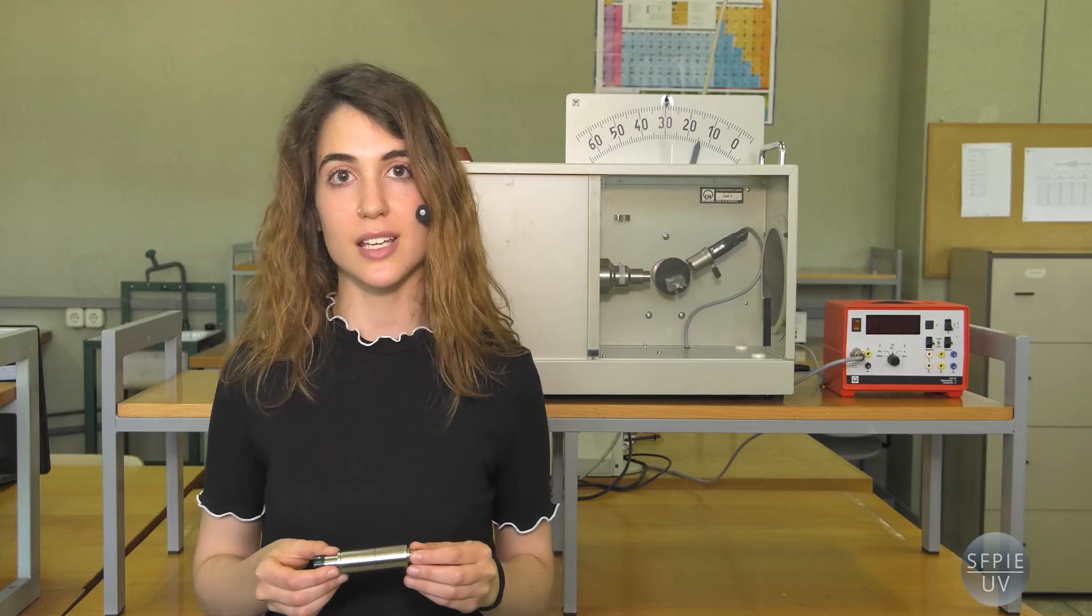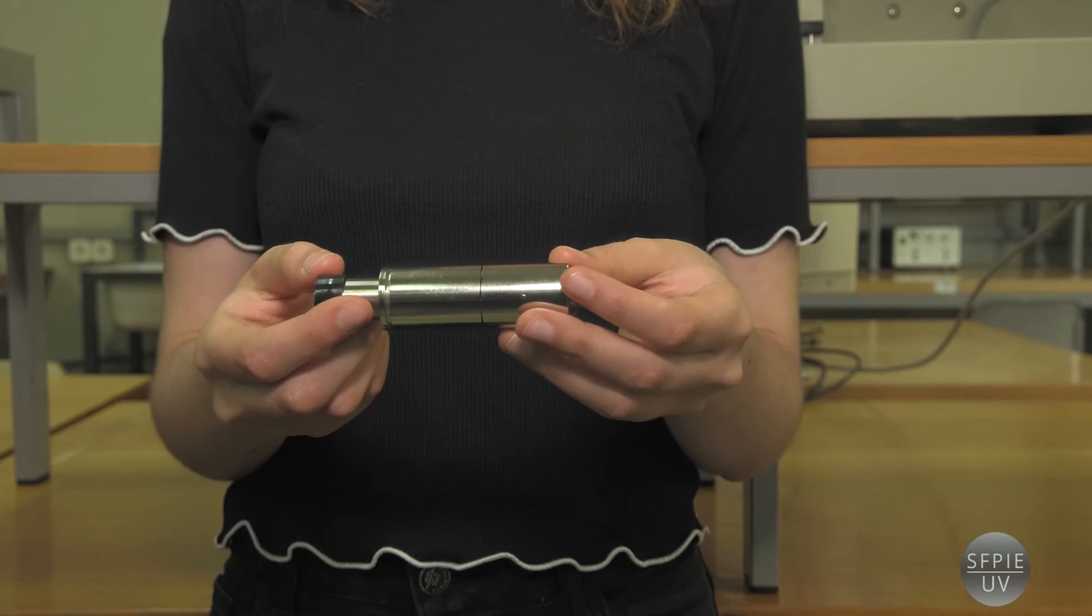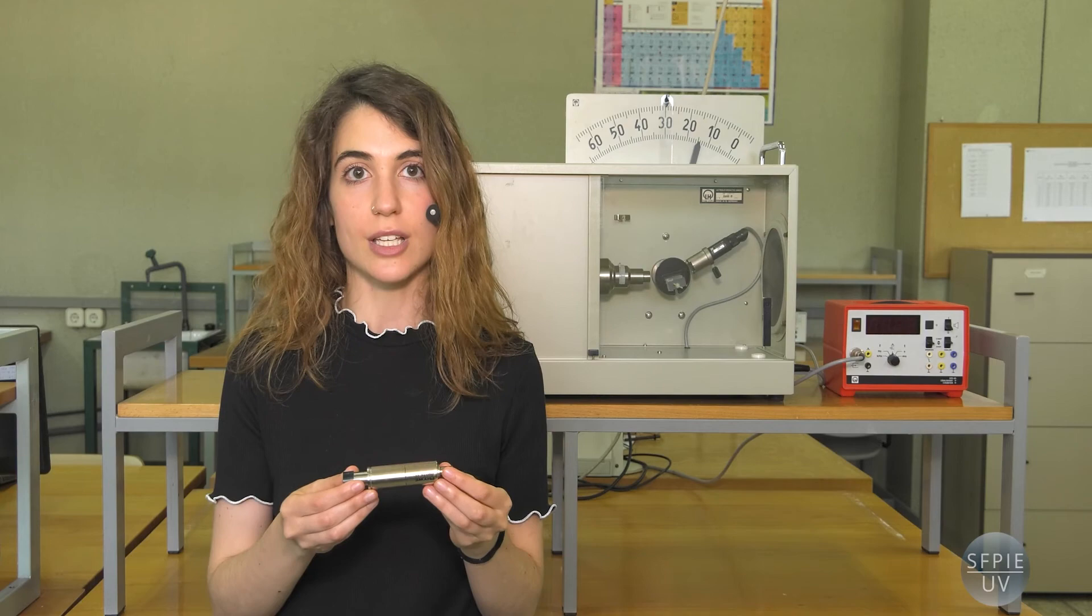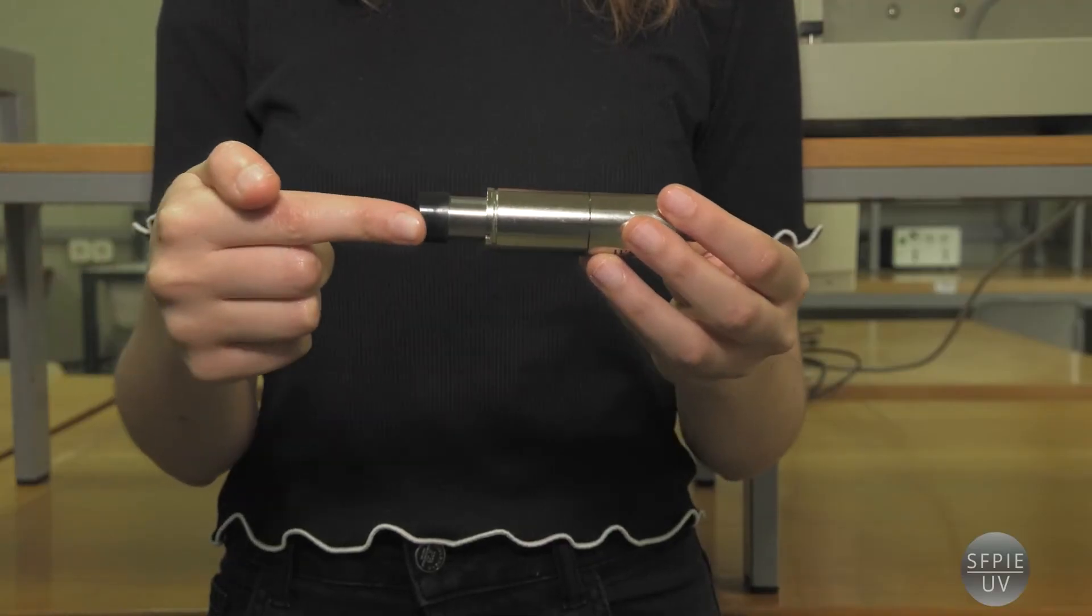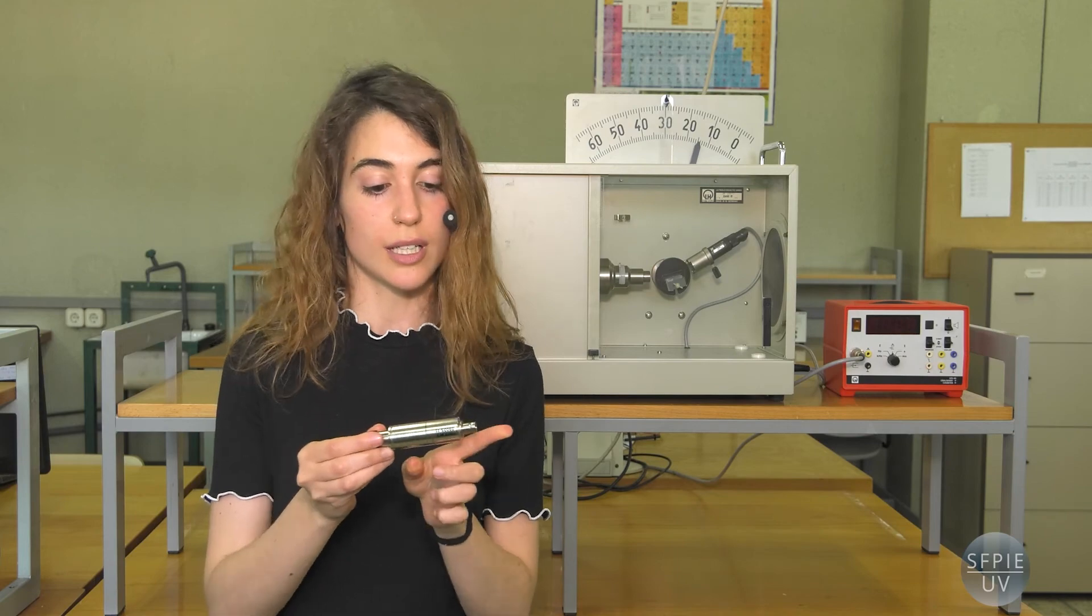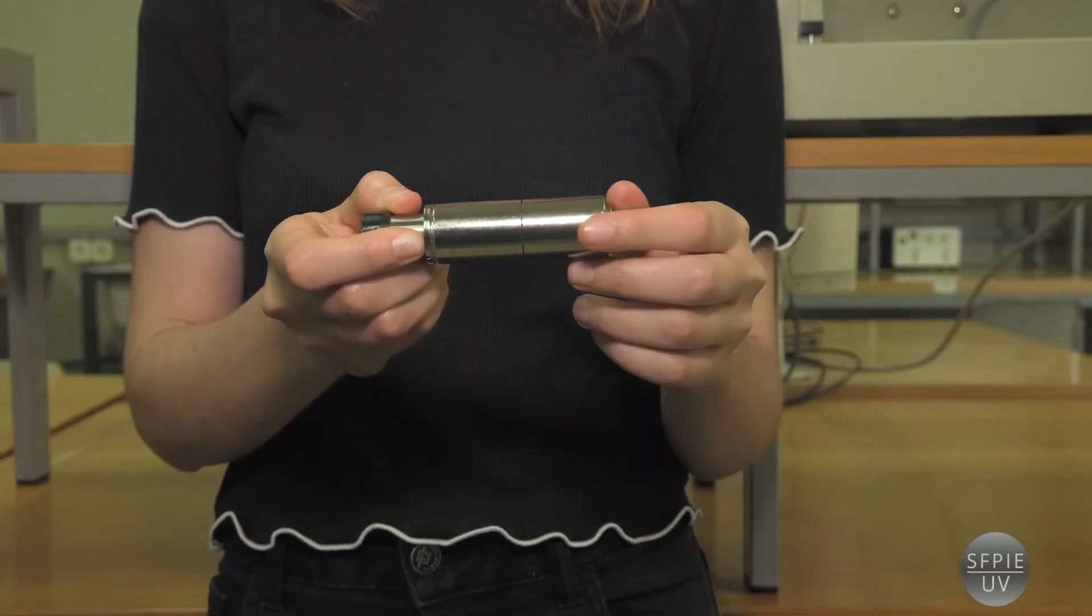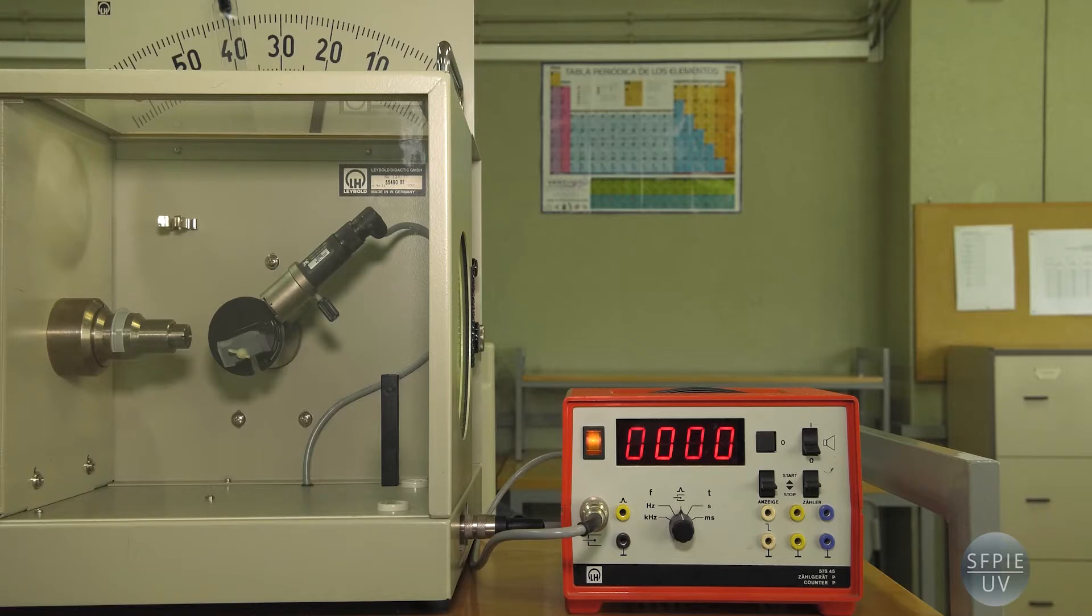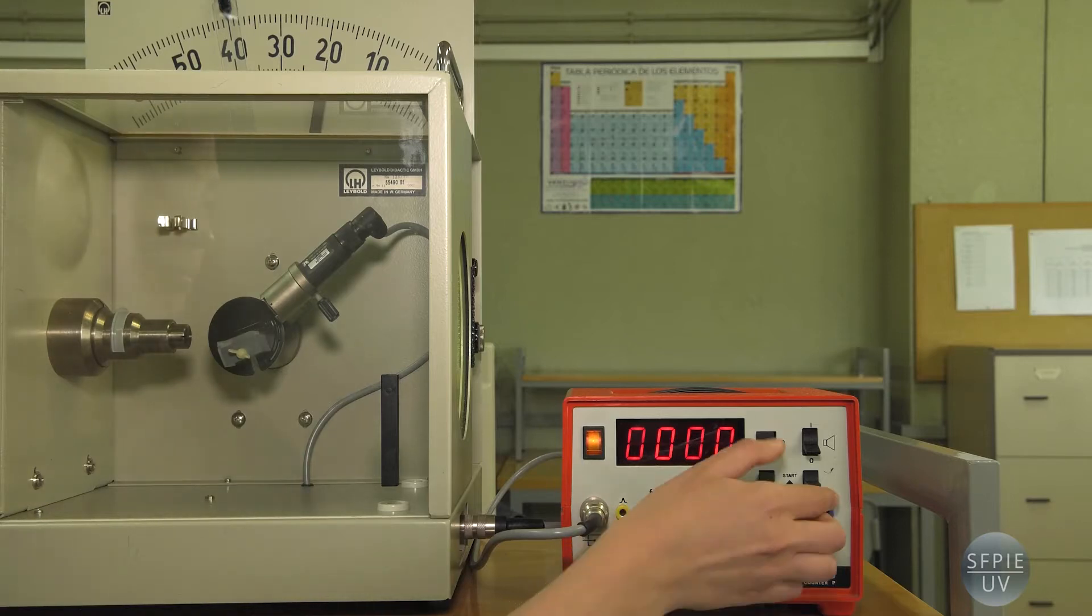The X-ray detector is a Geiger tube. It contains an inert gas subject to a high electric voltage. When the X-rays strike the gas, they ionize it, extracting electrons, which form an electric current whose intensity is proportional to the X-ray intensity. We'll measure the electric intensity in terms of the number of counts registered on this meter.